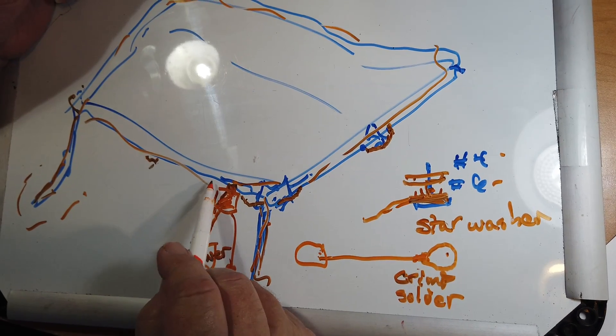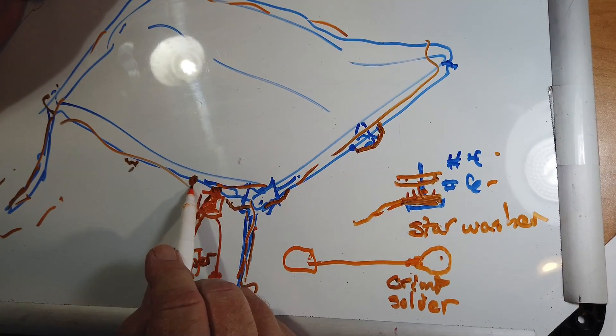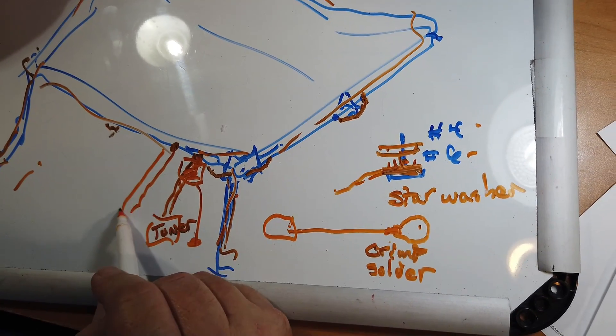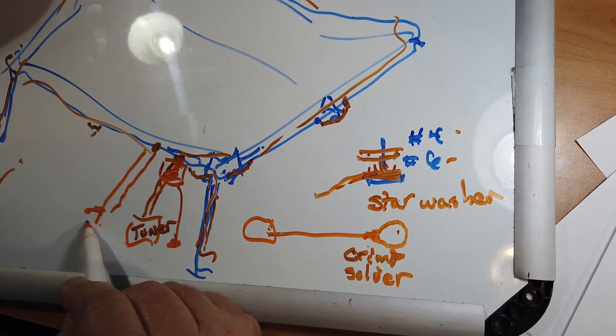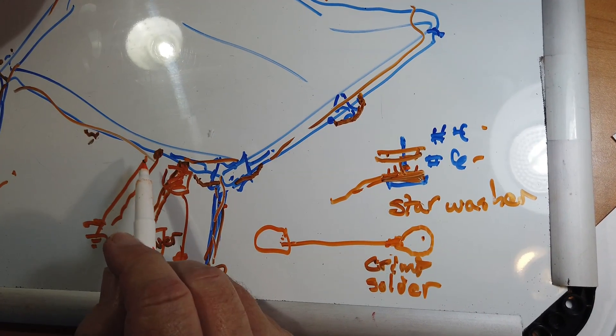Or if you just want to put one connection of your window line to here and the other connection to ground over here, that will help too.